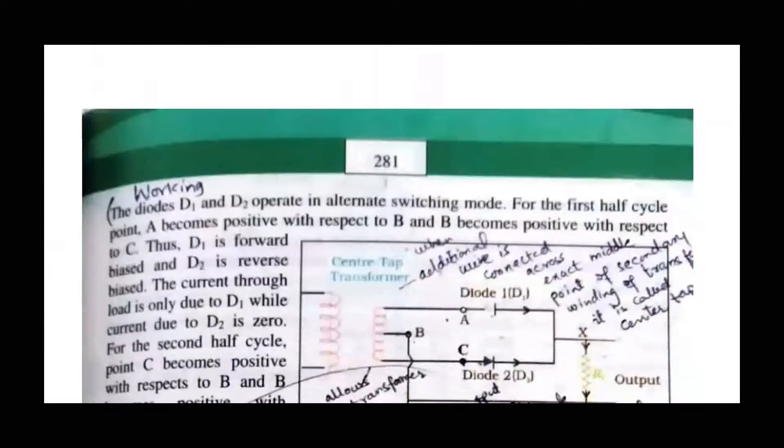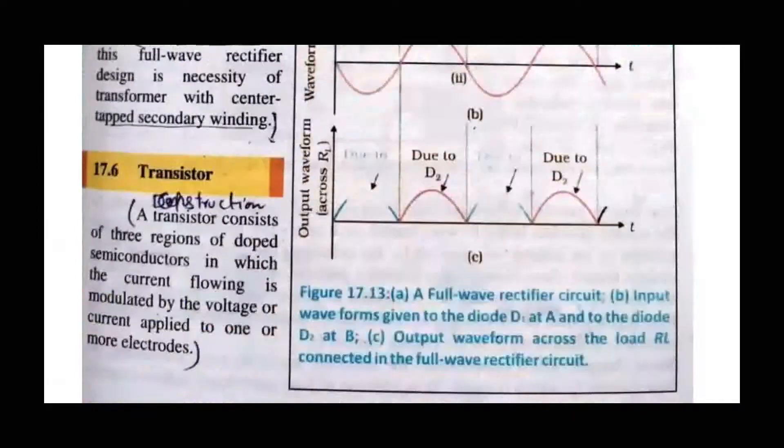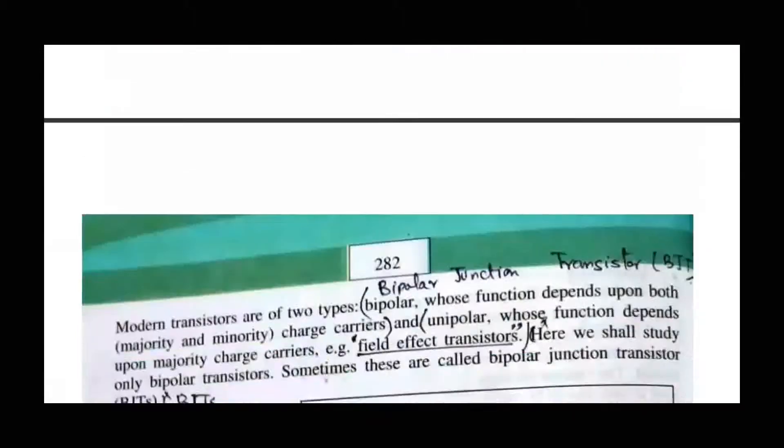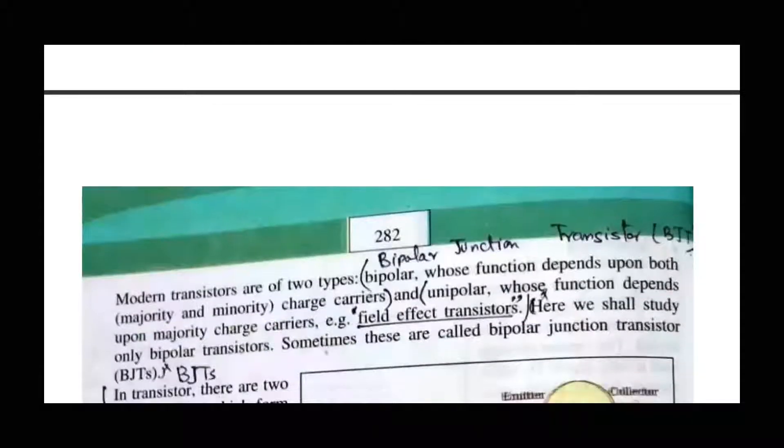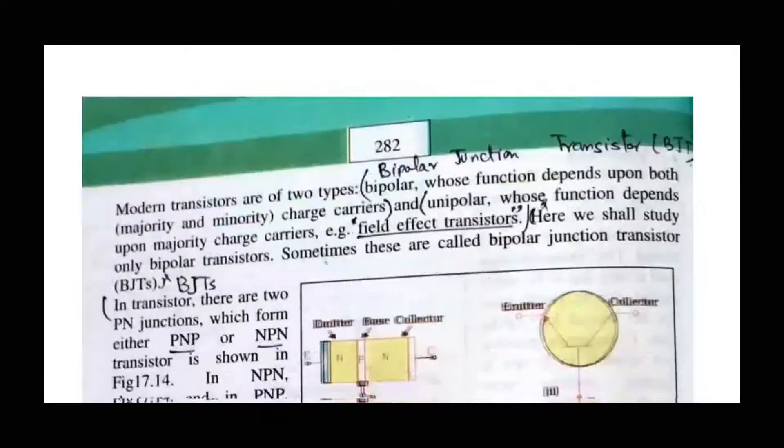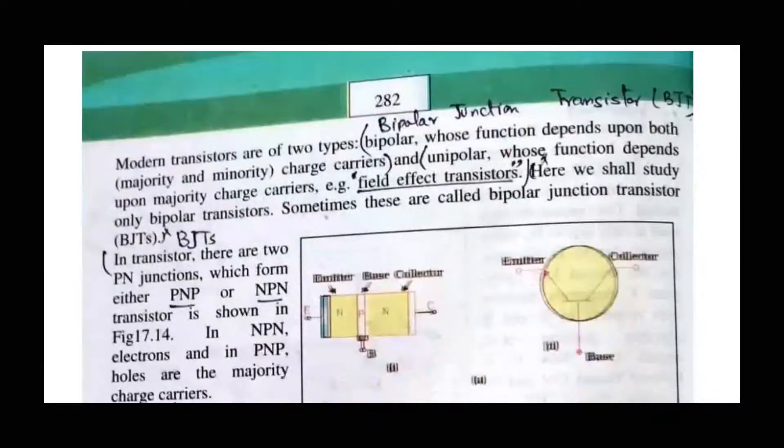First we will discuss the types of transistors. There are two types: bipolar junction transistors and field effect transistors.